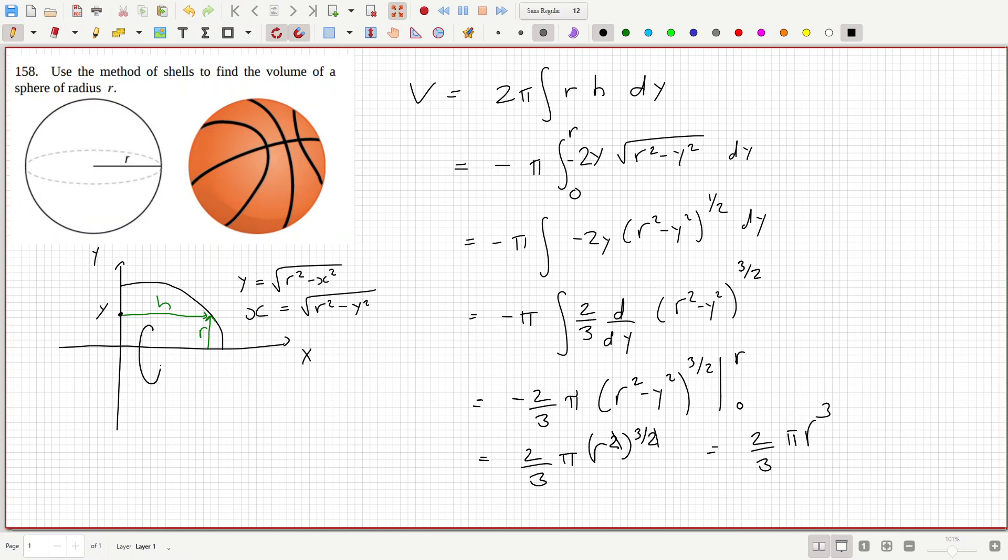But that's only for half, so you'd have to multiply that by two, so that would be four thirds pi r cubed.